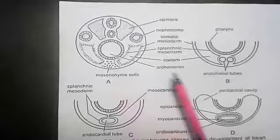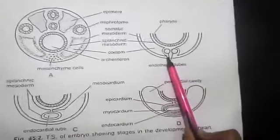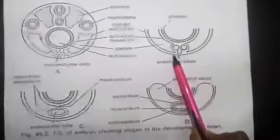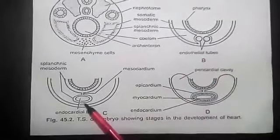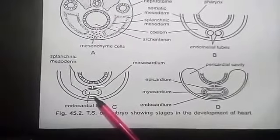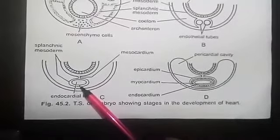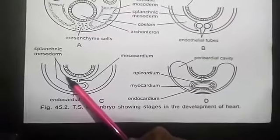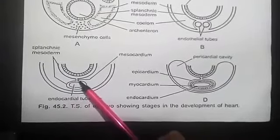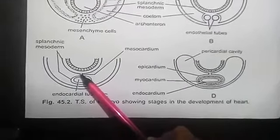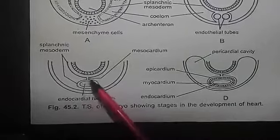These endocardial cells become arranged to form a pair of thin endothelial tubes. The two endothelial tubes soon fuse to form a single endocardial tube lying longitudinally below the pharynx. The splanchnic mesoderm lying below the endoderm gets folded longitudinally around the endocardial tube.